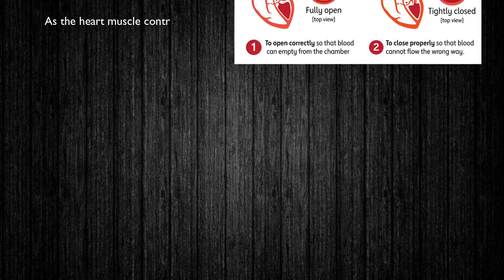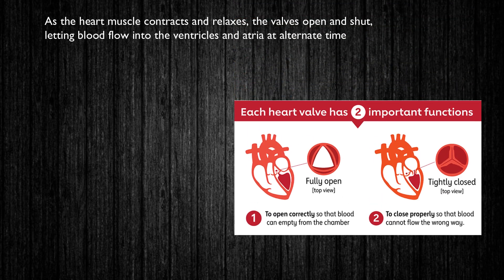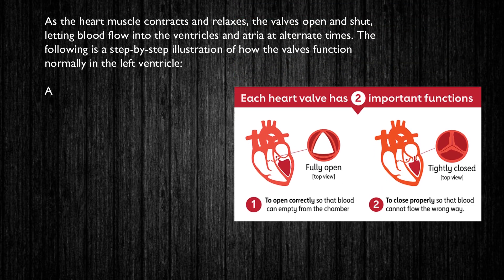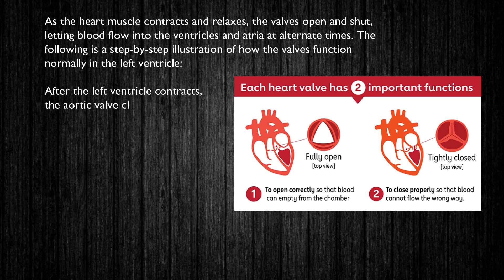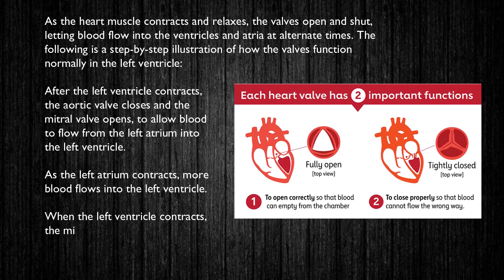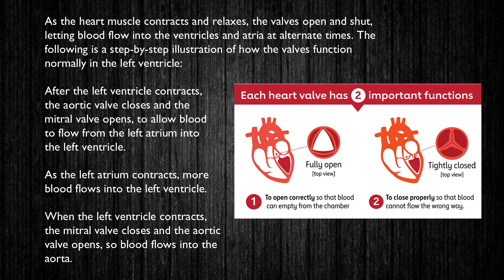As the heart muscle contracts and relaxes, the valves open and shut, letting blood flow into the ventricles and atria at alternate times. The following is a step-by-step illustration of how the valves function normally in the left ventricle.